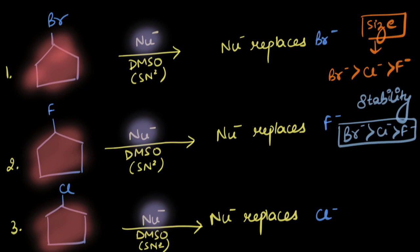So who leaves the most quickly? It's the bromide ion out of all three. Therefore, the first reaction would happen the most quickly and has the fastest rate. The order of rates is: reaction 1 > reaction 3 > reaction 2.